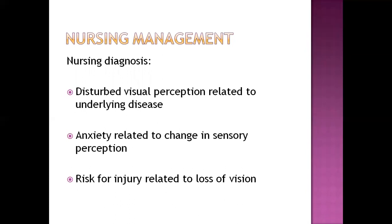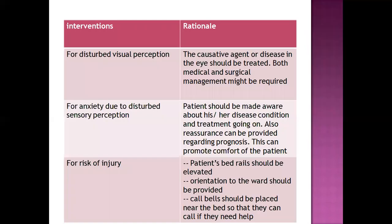In nursing management, we address disturbed visual perception, anxiety, and risk of injury. For visual perception disturbance, we identify the causative agent and treat it. For anxiety, the patient needs to know what they are suffering from and that the condition can be treated and complications prevented. For risk of injury due to lack of vision, nurses can provide interventions like elevating bed rails, orienting the patient to the ward, and placing call bells within reach.